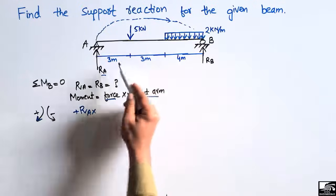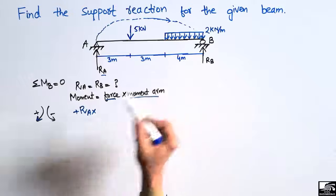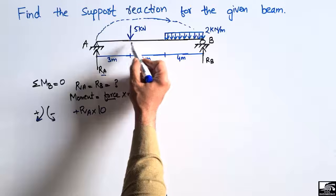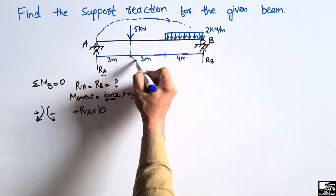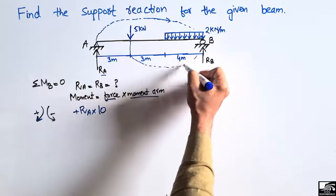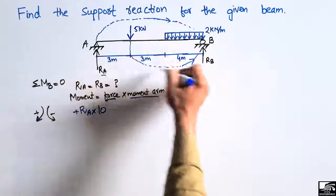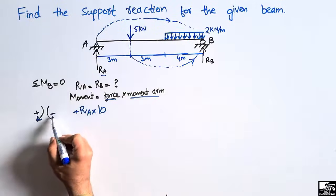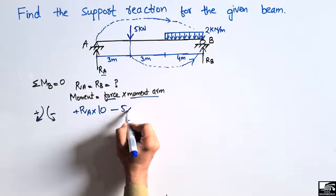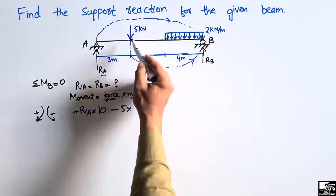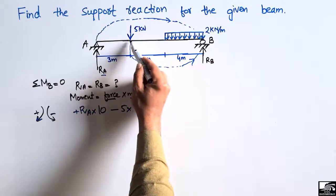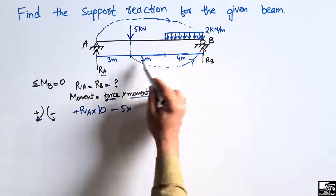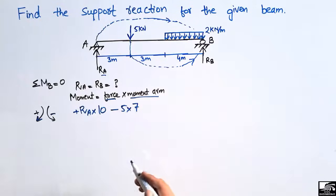The 5 kN concentrated load acts downward, creating an anti-clockwise moment about point B, so it is taken as negative. The moment arm is the distance from where the 5 kN load acts to point B, which is 3 plus 4 equals 7 meters. So the moment due to the 5 kN load is −5 × 7.